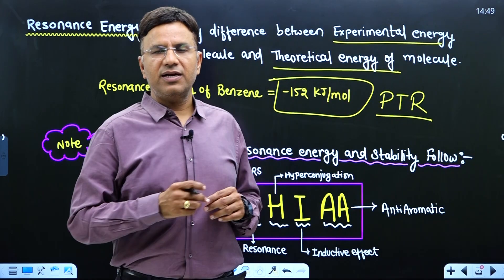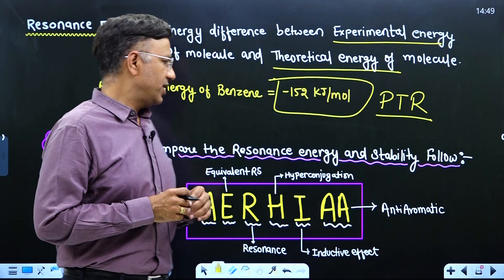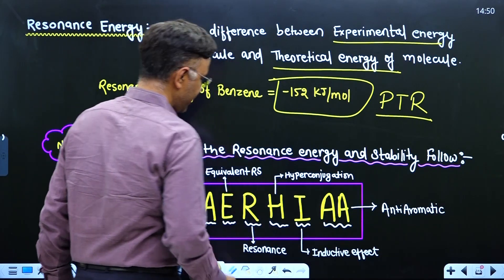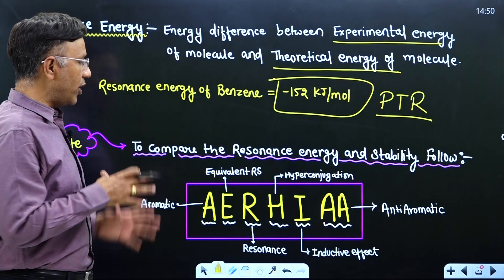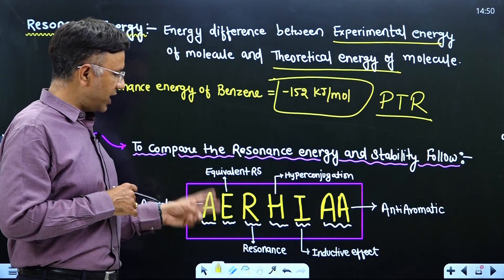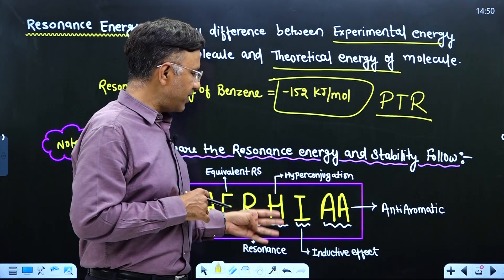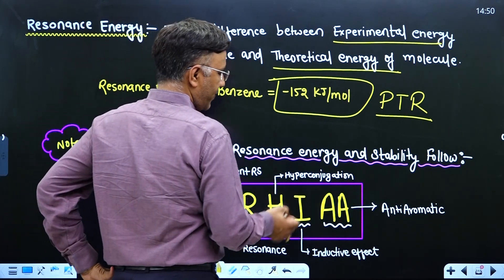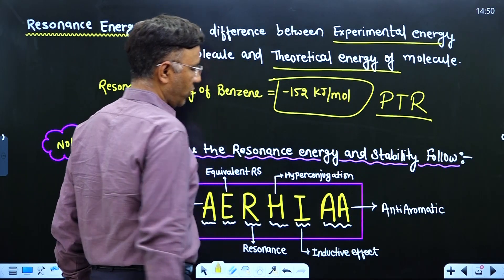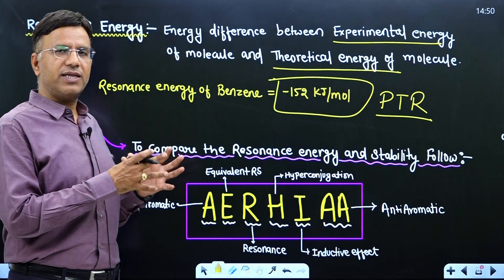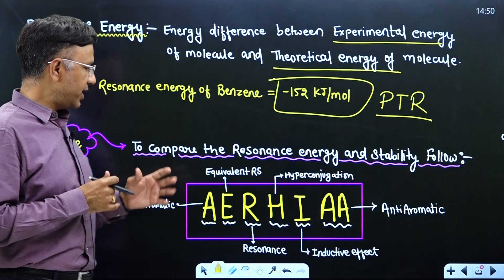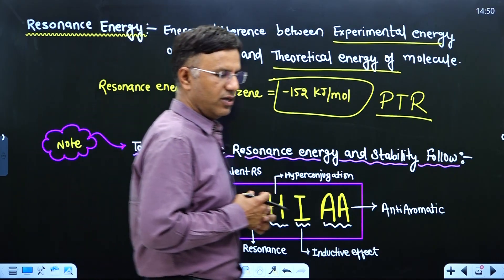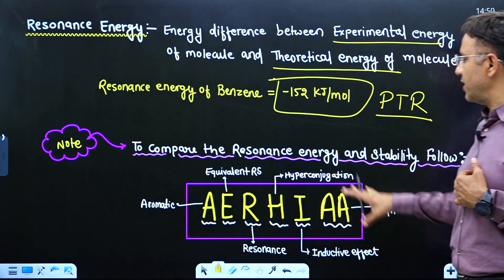Before starting resonance energy examples, remember this sequence — AERHI: Aromatic, Equivalent RS, Resonance, Hyperconjugation, Inductive, and Anti-aromatic. To compare resonance energy of different molecules, first check if the molecule is aromatic — it will have high resonance energy. Then check for equivalent RS, resonance, hyperconjugation, inductive effect, and finally anti-aromatic.